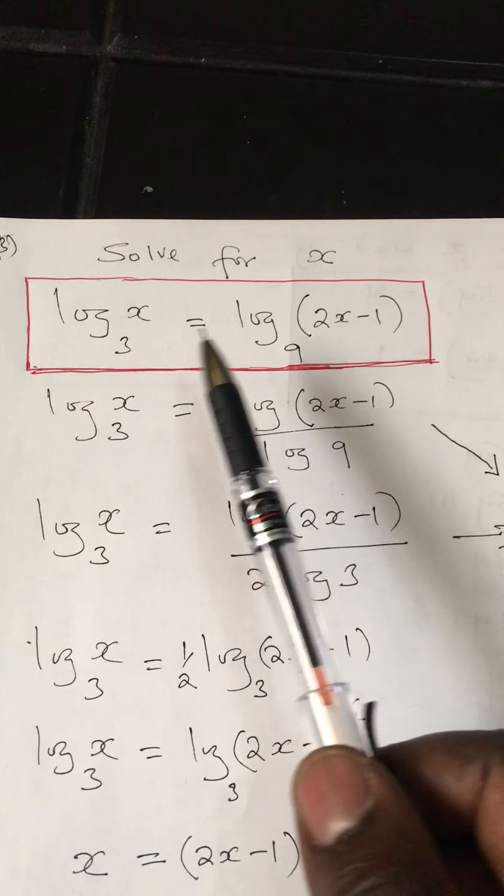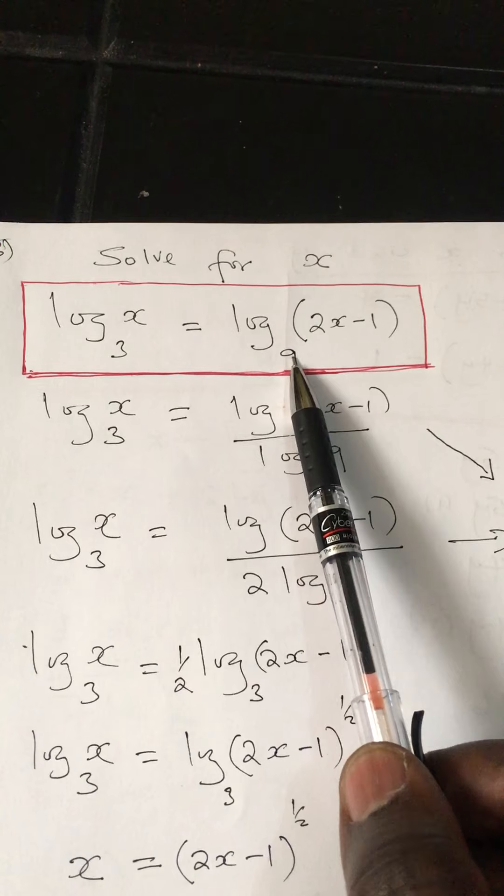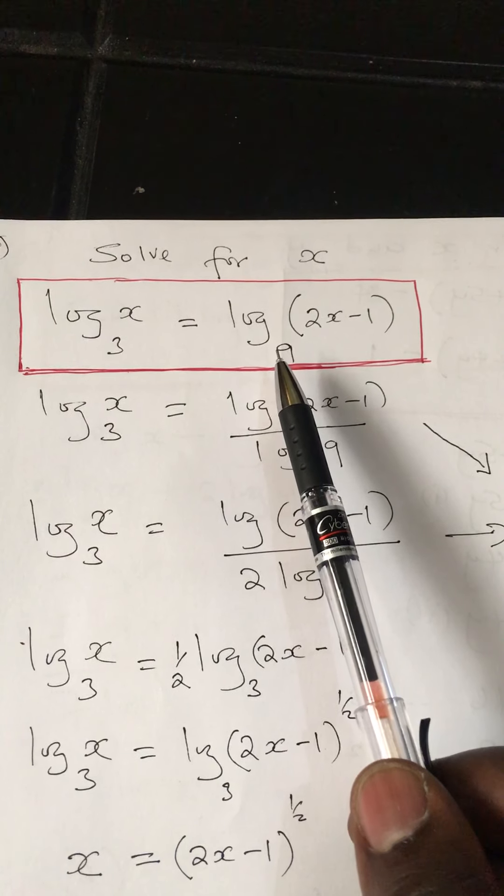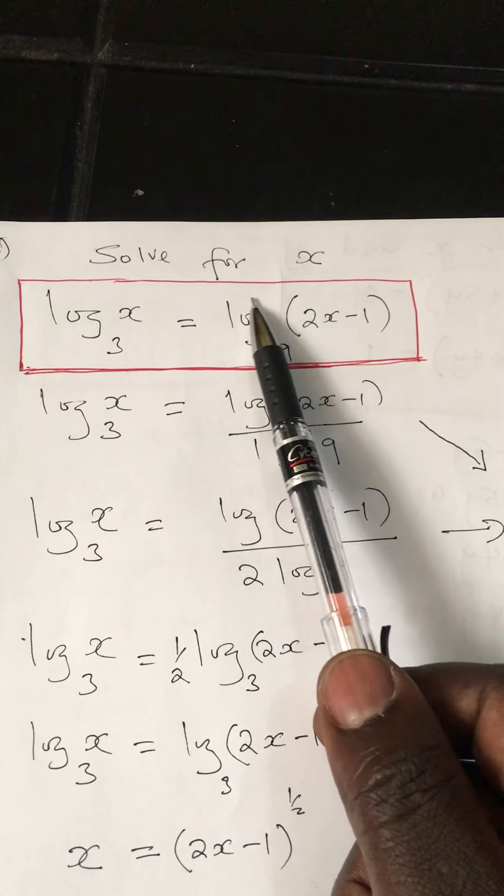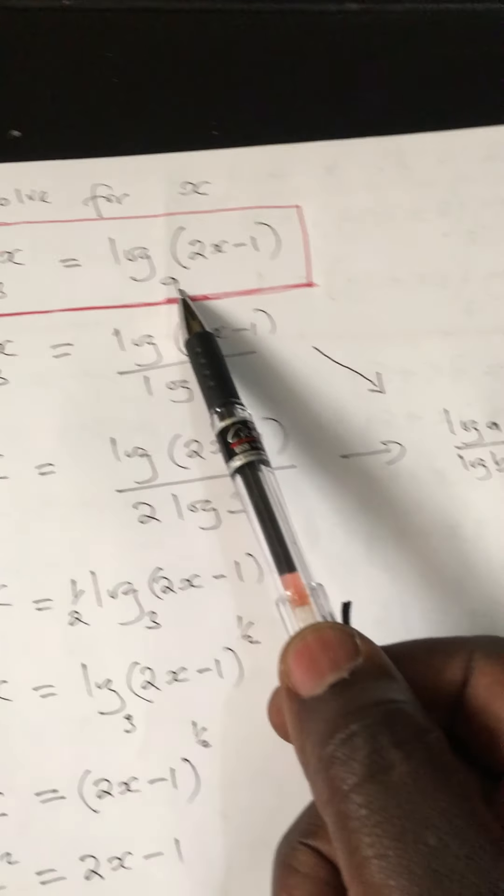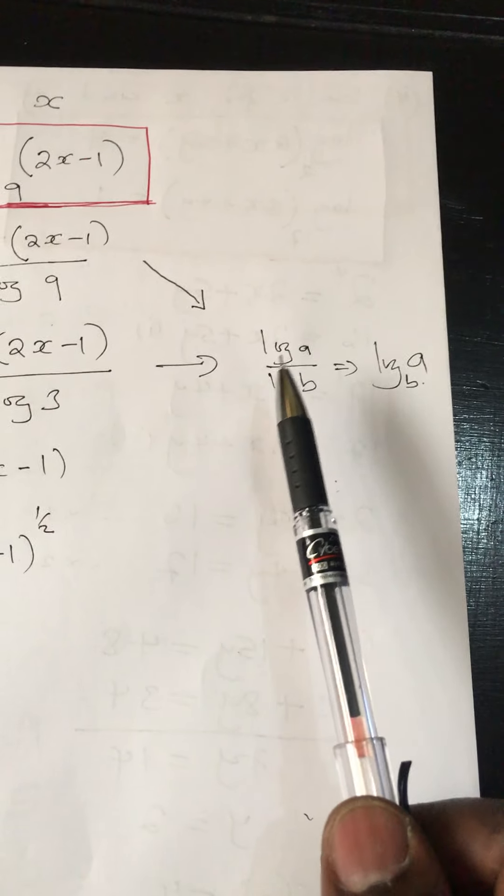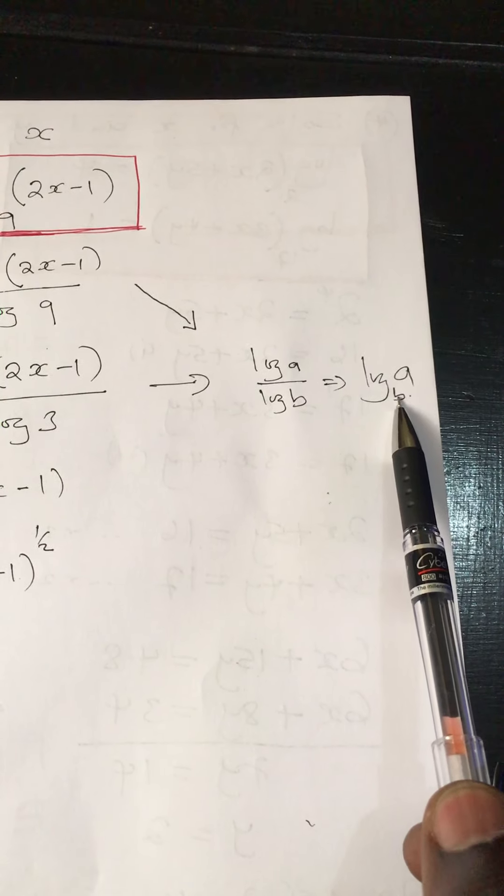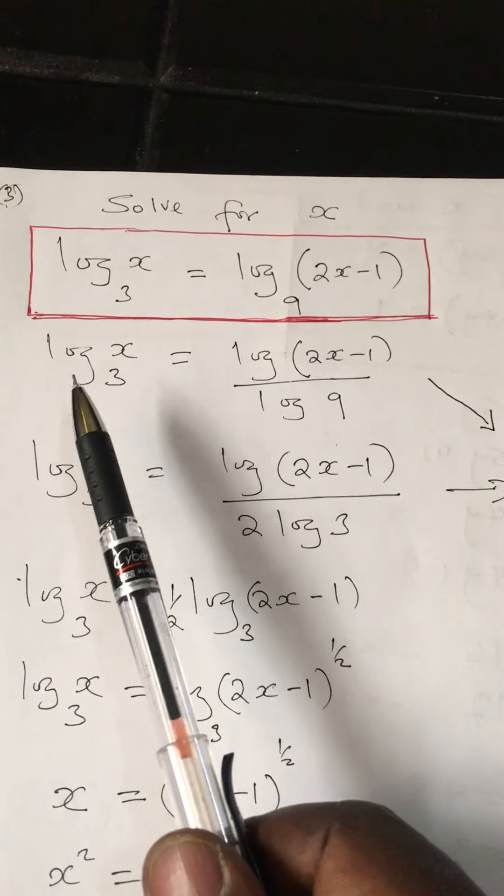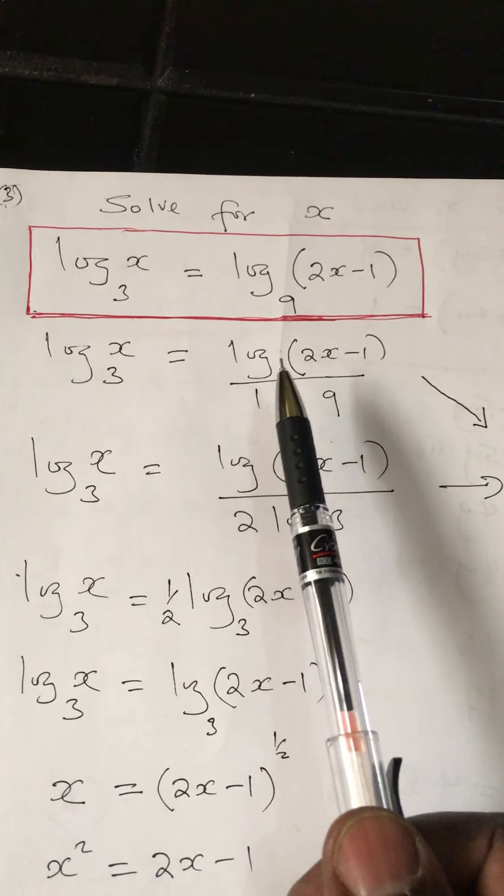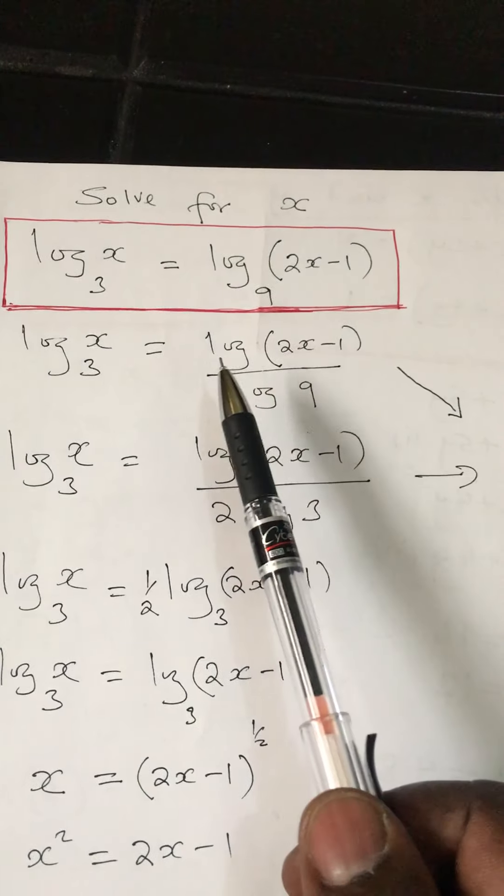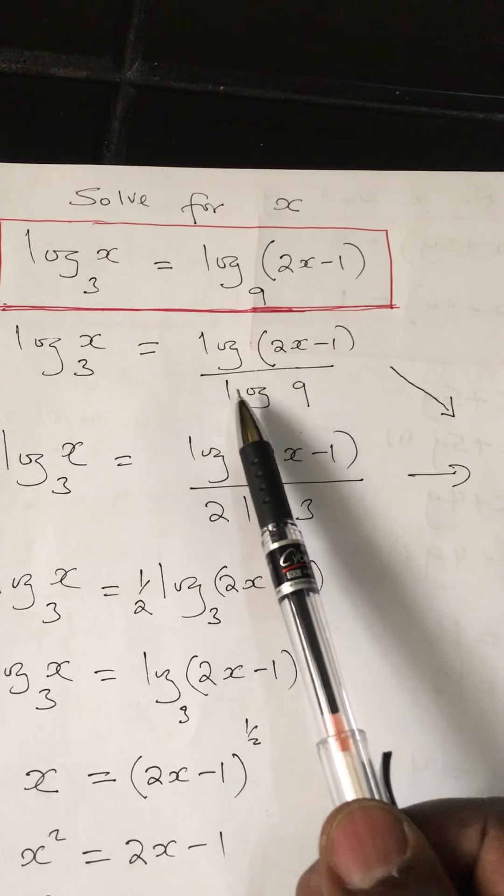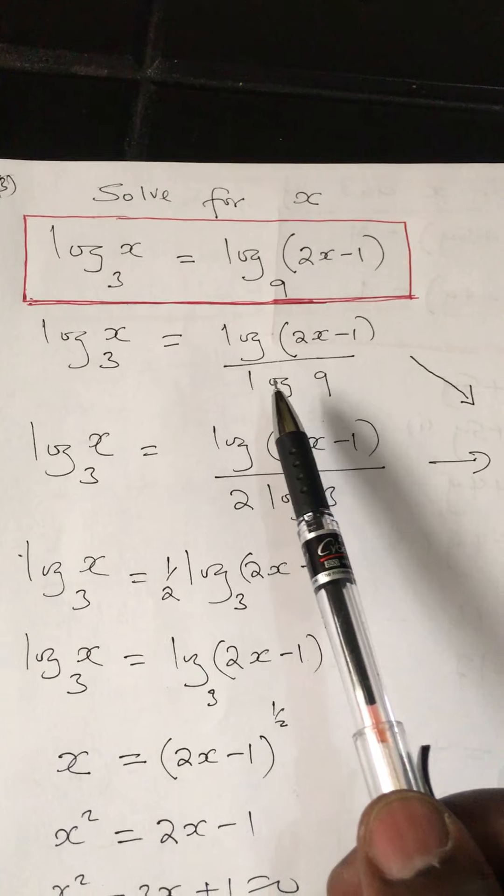Because there is 3 and 9, but the good thing is I can see a relationship - 9 relates to 3, so I can write 9 in terms of 3. We'll have to simplify this first. This takes me to the law that log a over log b is the same as log a base b. Back to this question, I can change it into that form.